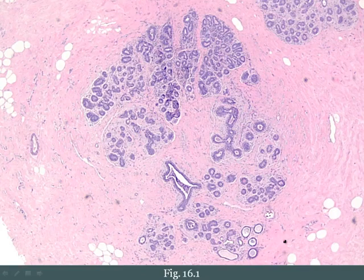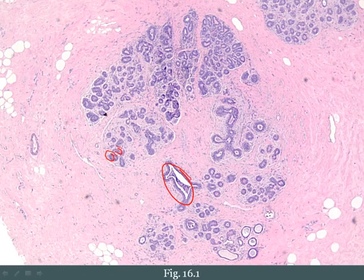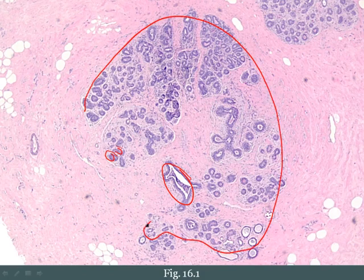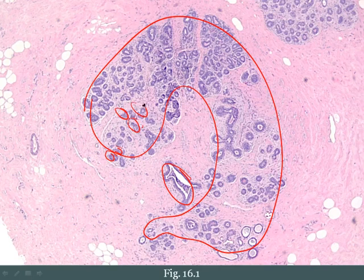Here is a histologic picture of that. You can see the terminal duct cut on end, and then all these little lobular spaces representing the lobule, with the little glandular spaces that would be producing milk in the proper physiologic context. That's the normal histology.